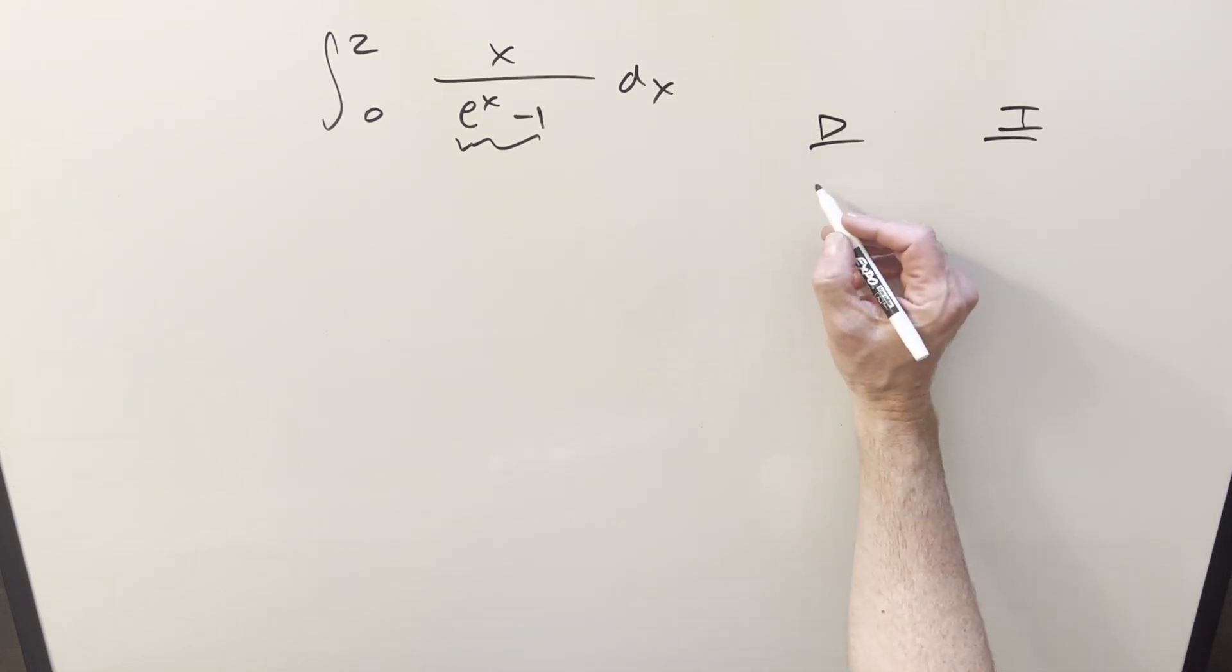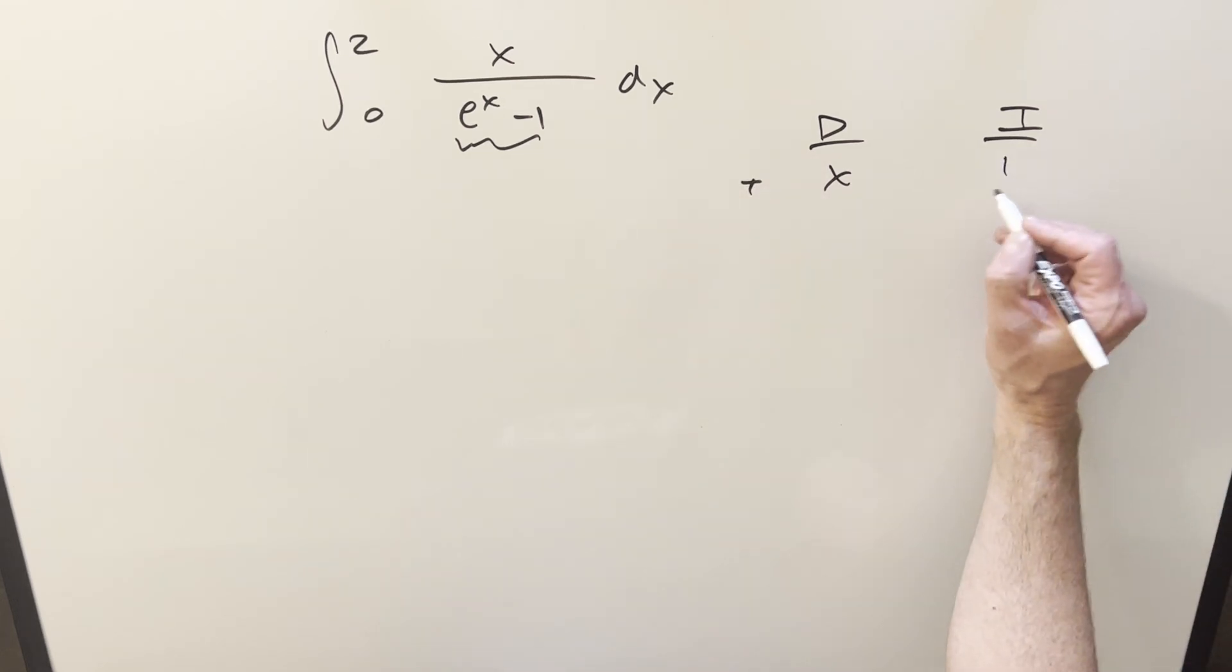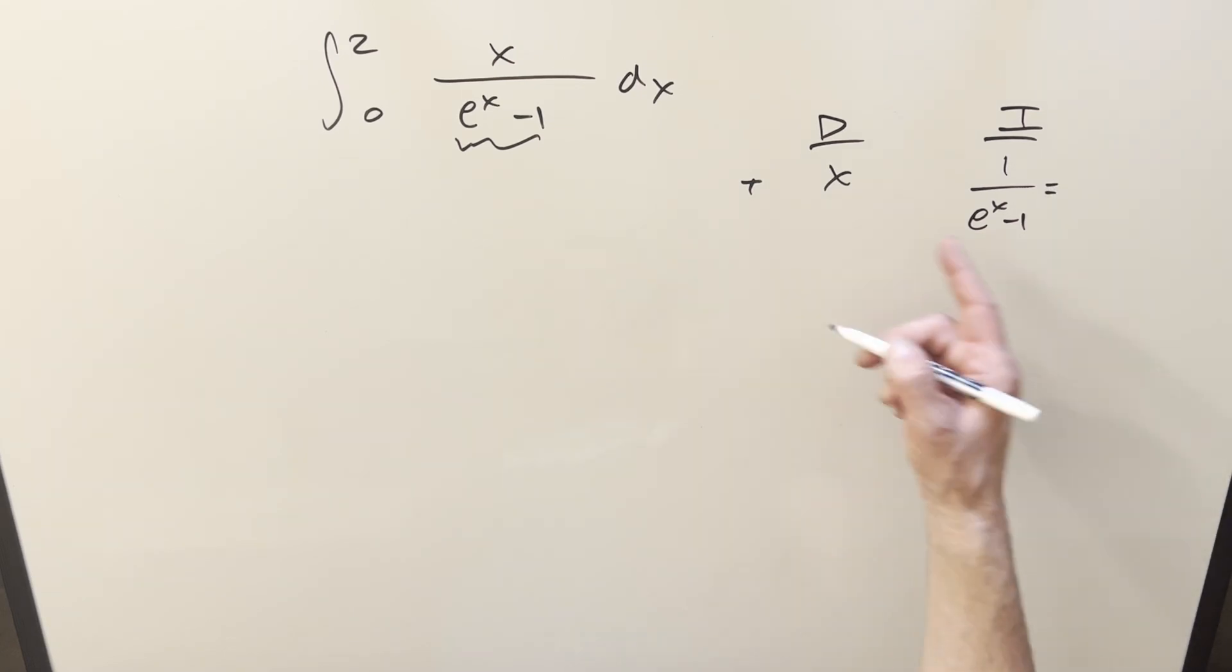So what I can do is we can just differentiate the x, because that's going to differentiate down to a constant. And then we'll integrate 1 over e to the x minus 1. But just noticing, if you multiply in e to the minus x over e to the minus x here, I can write this as e to the minus x over 1 minus e to the minus x. So now differentiating over here, derivative of x, that's just 1.